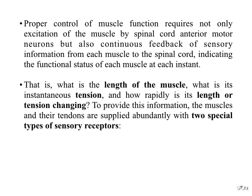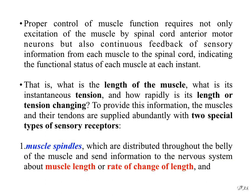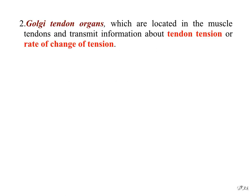To provide this information, the muscles and their tendons are supplied abundantly with two special types of sensory receptors. One: muscle spindles, which are distributed throughout the belly of the muscle and send information to the nervous system about muscle length or rate of change of length. Two: Golgi tendon organs, which are located in the muscle tendons and transmit information about tendon tension or rate of change of tension.